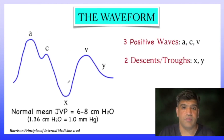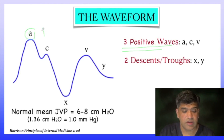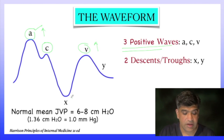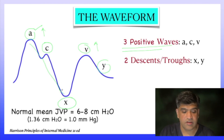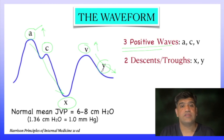Now let us come to the waveform. In the waveform, there are three positive waves and two descents or troughs. The positive waves are the A wave, then a small C wave, and the third is the V wave. The troughs or descents are the X and the Y — so from here it descends, and this descent is what we call the Y descent.